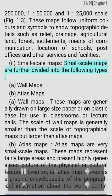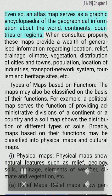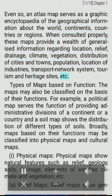Small-scale maps are further divided into: A. Wall maps and B. Atlas maps. Wall maps are generally drawn on large-size paper or on a plastic base for use in classrooms or lecture halls. The scale of wall maps is generally smaller than the scale of topographical maps but larger than atlas maps. Atlas maps are very small-scale maps. These maps represent fairly large areas and present a highly generalized picture of the physical or cultural features. An atlas map serves as a graphic encyclopedia of geographical information about the world, continents, countries or regions. When consulted properly, these maps provide a wealth of generalized information regarding location, relief, drainage, climate, vegetation, distribution of cities and towns, population, location of industries, transport network system, tourism and heritage sites, etc.